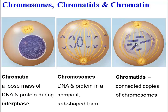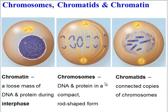Now chromatids will form after S phase. Chromatids are simply connected, identical copies of the chromosomes. So in this picture, here's one chromosome, but it consists of two sister chromatids. Here's one chromosome consisting of two sister chromatids. So in both cases, these are nice and compact, but here the chromosomes are doubled, and here the chromosomes are not.